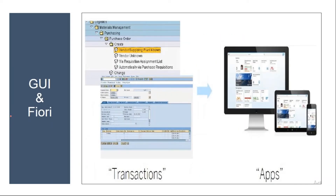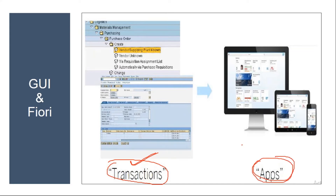The transformation is that in ECC we were using only the GUI, where we executed functions using transactions — like create production order, change production order, create BOM. All these business functions were executed using transactions. But in Fiori, functions are executed using apps, which are also called tiles.